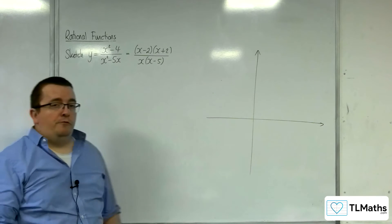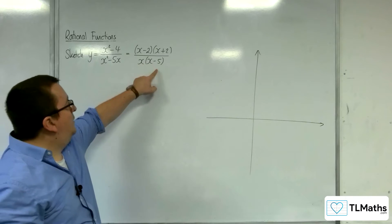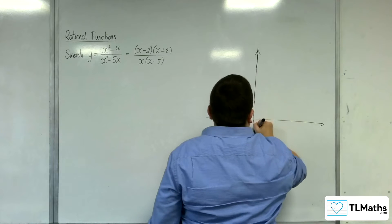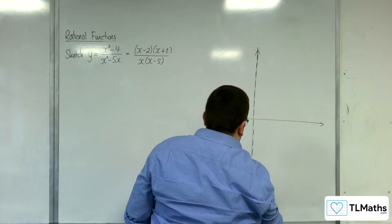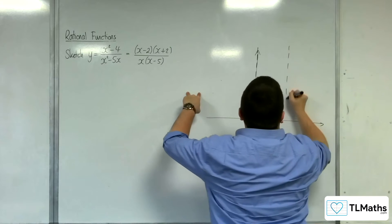So first of all, vertical asymptotes. They're going to exist when x is 0 and x is equal to 5. So I'm going to try and make that as prominent as possible. So x equals 0 and x equals 5.